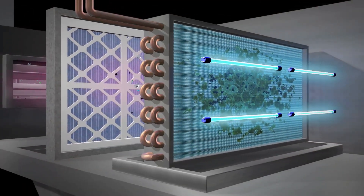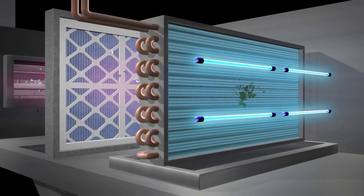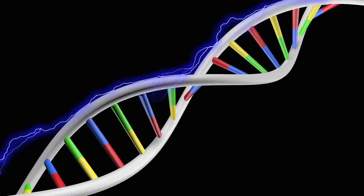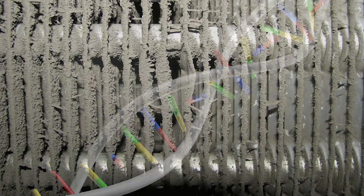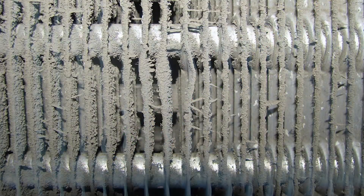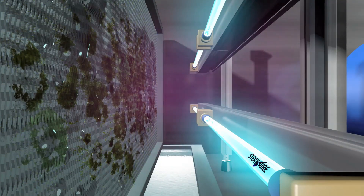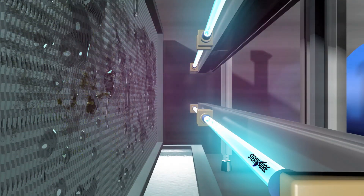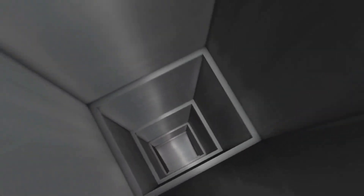By positioning Sterile Air's high-output UVC emitters at the coil, one can eliminate mold by destroying the DNA inside the microbes. Once the DNA is destroyed, the microbe can neither grow nor duplicate, so it dies. Sterile Air's emitters continuously clean the coil fins. The dead mold falls away with the dirt and is washed by the condensate into the drain pan. The biofilm growing in the ducts also dies once it is starved of its food source growing in the coil.